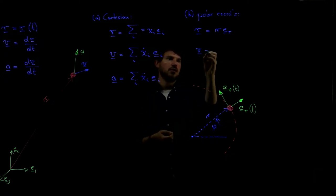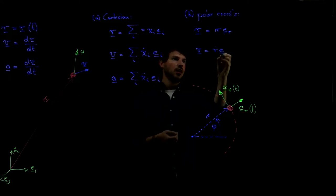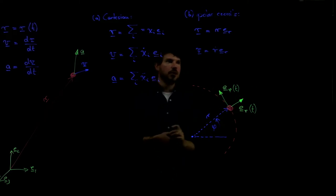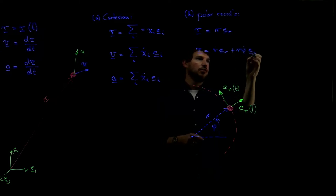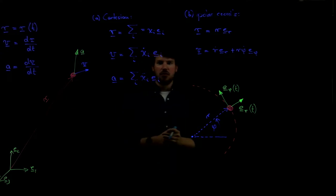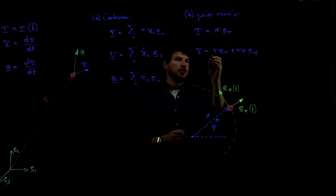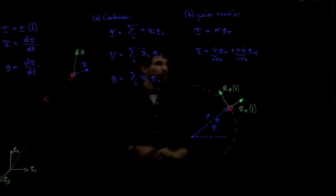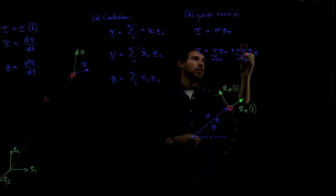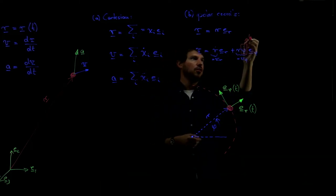For example, the velocity is now r dot times ER, motion in the radial direction, plus r times phi dot times E-phi. It's the motion in the tangential direction. This is the VR component, and this is the V-phi component. And note that we often also take this phi dot as the angular velocity and call it omega.